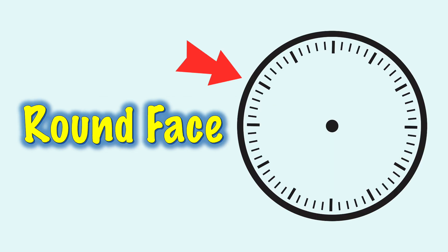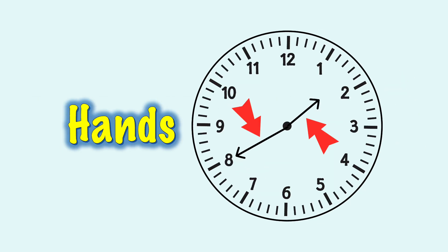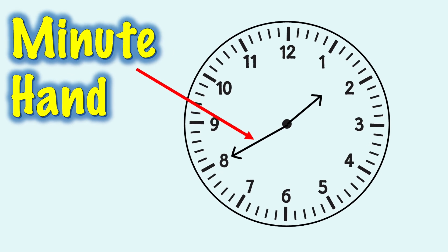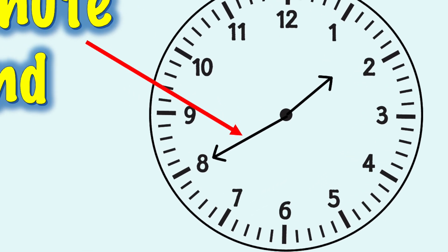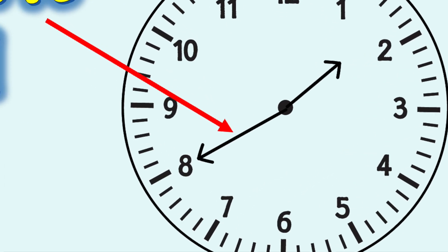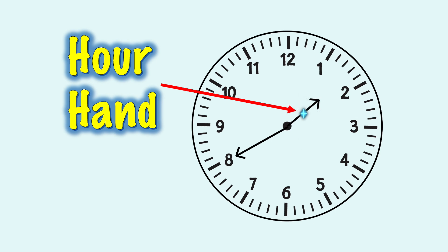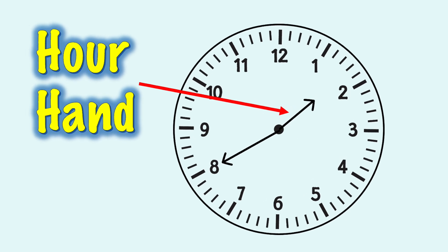An analog clock has a round face, numbers, and two hands that move. A minute hand is a long hand on the face of an analog clock — it tells us the minutes. An hour hand is a shorter hand on the face of an analog clock — it tells us the hours.